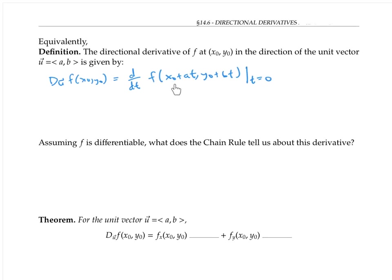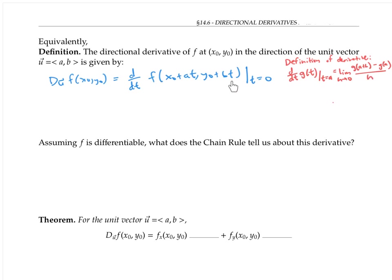Notice that we're thinking of this expression as a function of t. The reason this definition is equivalent to the previous one follows from the ordinary calculus-one definition of derivative. Recall that d/dt of a function g(t) at t equals a is given by the limit as h goes to zero of g(a + h) minus g(a), all over h. For us, since we're evaluating at t equals zero, our a is zero.